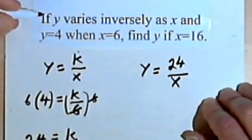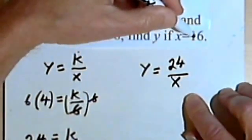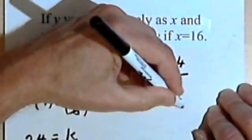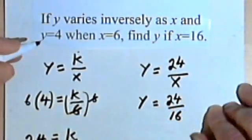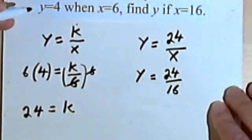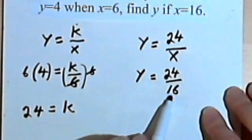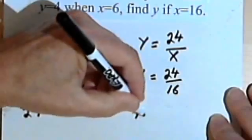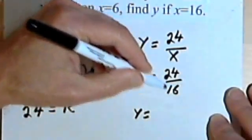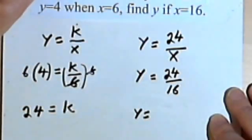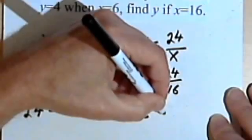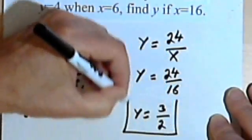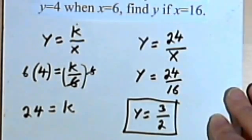And the problem is asking me to find y if x is 16. So I want to find y when x is 16. Okay, so y equals 24 over 16. But I can't leave it like that because this fraction can be reduced. So y equals, let's see, 24 and 16 can both be divided by 8. So 24 divided by 8 is 3, and 16 divided by 8 is 2. So I'm going to have y equals 3 halves.